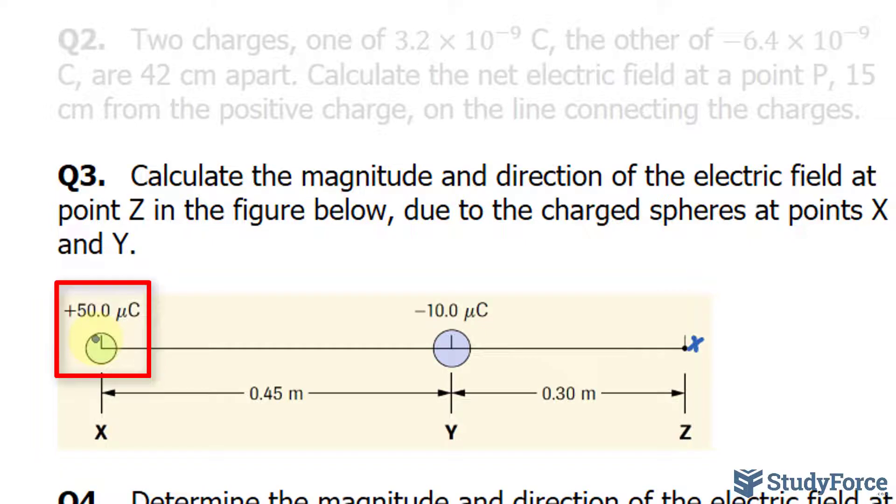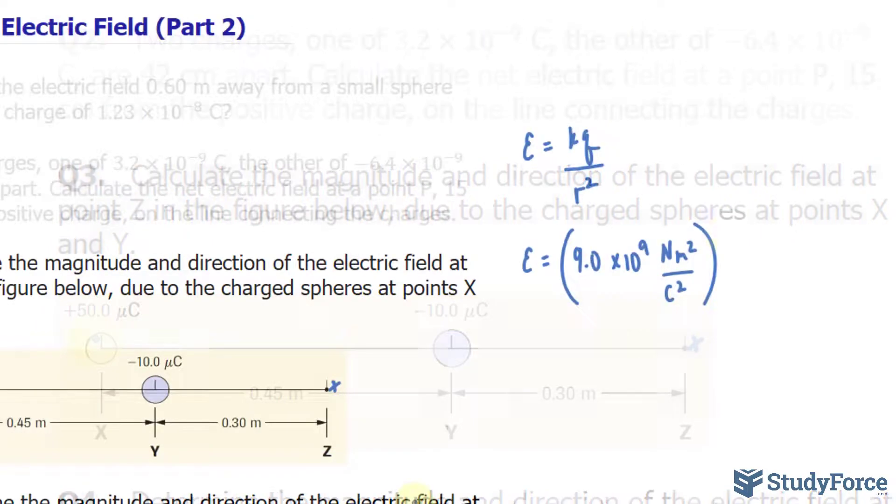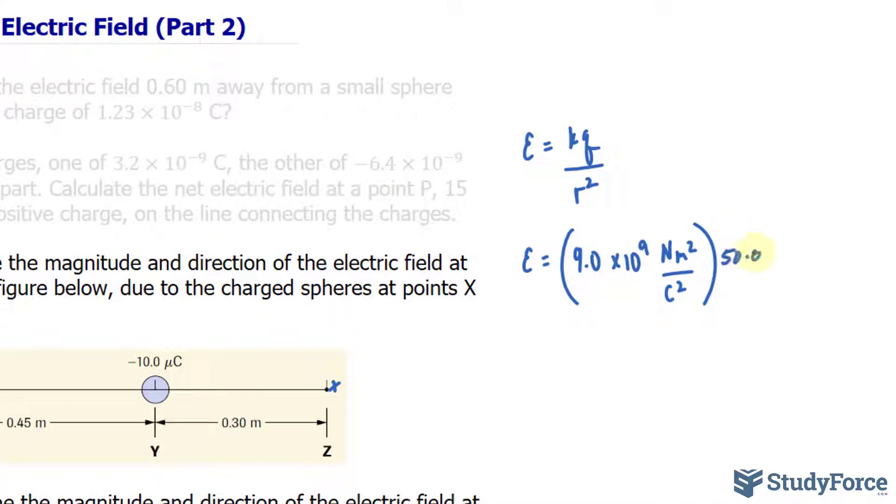Notice that this is in microcoulombs. It needs to be converted into coulombs. And I'm assuming you know how to convert it. 50.0 microcoulombs to coulombs is this number times 10 to the power of negative 6 coulombs. Now if you don't know how to convert it, just let me know in the comment section below and I'll guide you through it.